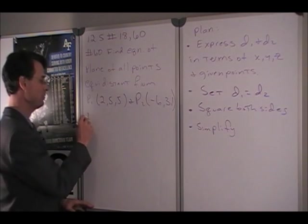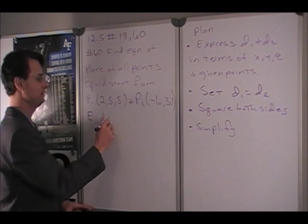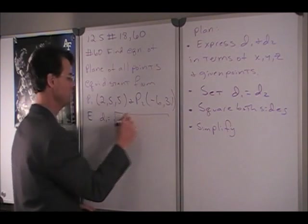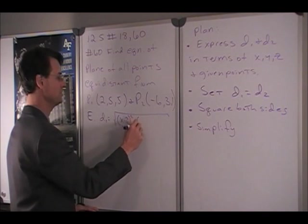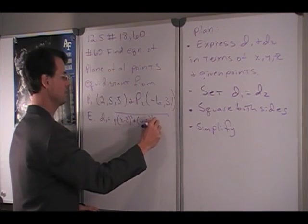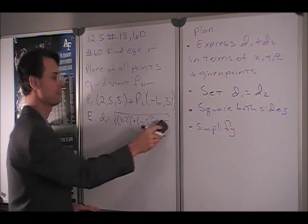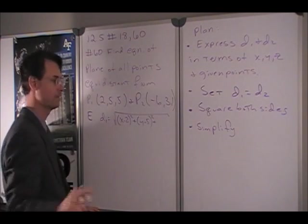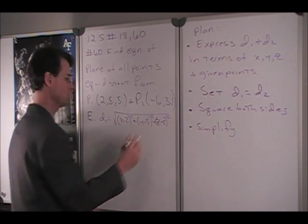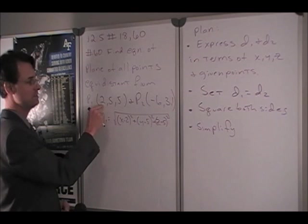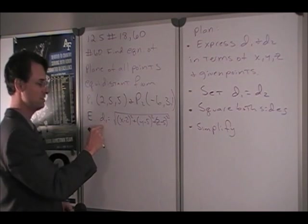All right, so to evaluate the problem, the distance formula D1 is equal to the square root of X minus 2 squared plus Y minus 5 squared plus, oops, that should be a Z, Z minus 5 squared. In other words, this is the X coordinate, the Y coordinate, and the Z coordinate. So this is D1.